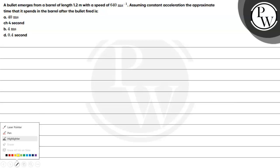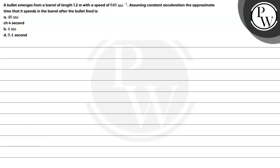Let's read this question. A bullet emits from a barrel of length 1.2 meters at a speed of 640 meters per second. Assuming constant acceleration, find the approximate time it is spent in the barrel after the bullet is fired. The key concept of this question is constant acceleration, or uniform acceleration.